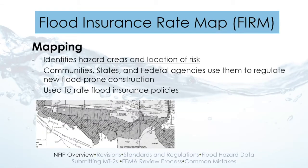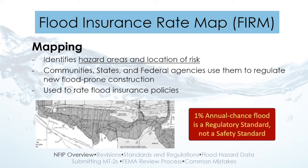In the FIS report there's a community narrative giving background from hydrologic and hydraulic analyses and floodplain management applications. It also has tables such as the floodway data table, summary of discharges table, and vertical datum conversions table, as well as flood profiles showing the base flood elevation and other flooding elevations at different studied recurrence intervals. The flood insurance rate map identifies hazard areas and locations of risk. Communities use them to regulate new flood-prone construction, but the 1% annual chance flood is only a regulatory standard — not being in the 1% floodplain does not mean you are safe from flooding.